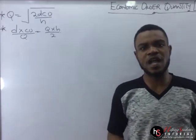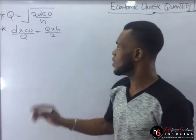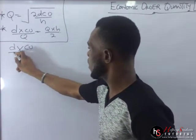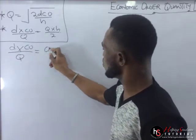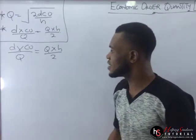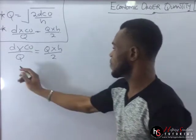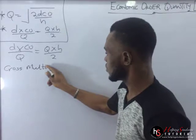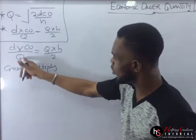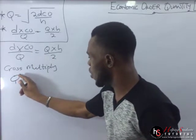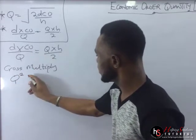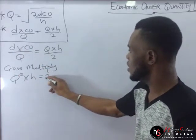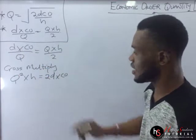Now, if in the exam you have been asked to derive the EOQ, you follow this step. We start with the same values: D times CO over Q, which is equal to Q times H over 2. The next thing we do is cross-multiply. When we cross-multiply, Q comes over, so we'll have Q squared. Q squared times H is equal to — this goes over — we have 2D times CO.